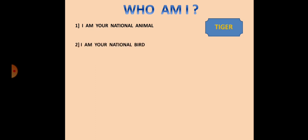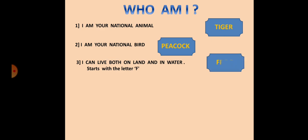The second one: I am your national bird. So which is our national bird? Yes, our national bird is peacock. The next one: I can live both on land and in water. The animal starts with the letter F. What is it? Yes, it is a frog.